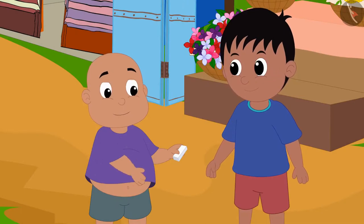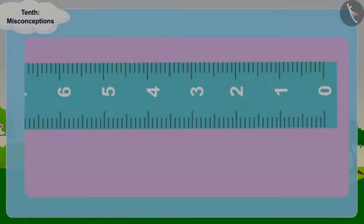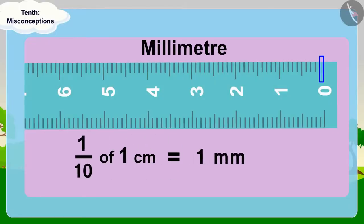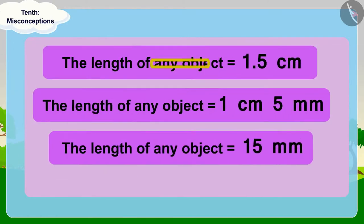Raju and Bablu split the eraser in half. Children, because millimeter is 1 tenth of a centimeter, we can write the length of any object in these three ways and it is exactly the same.